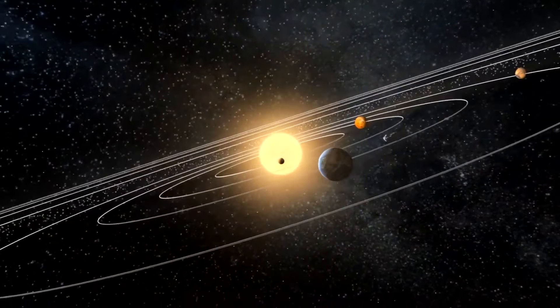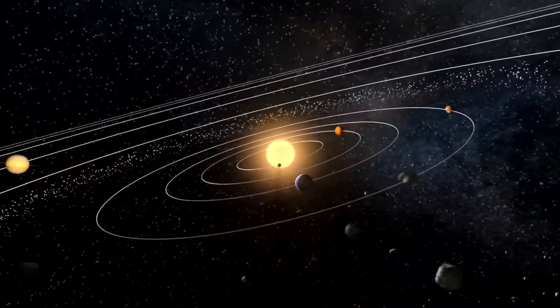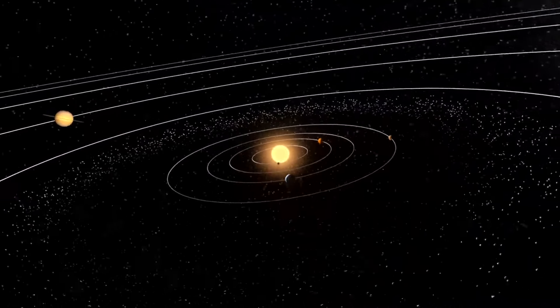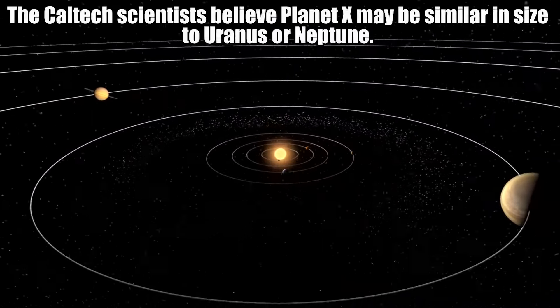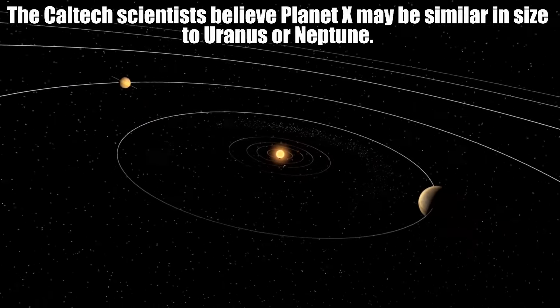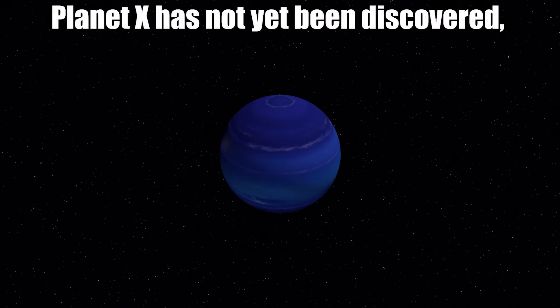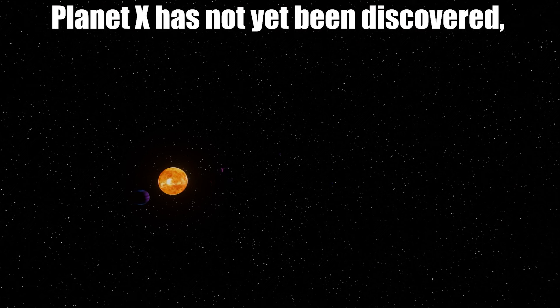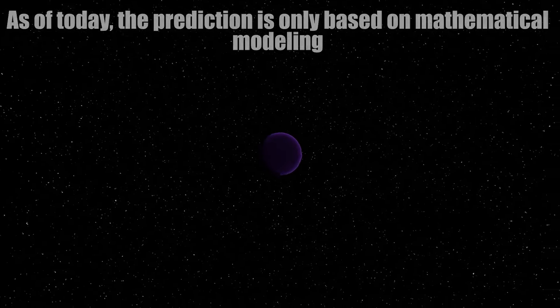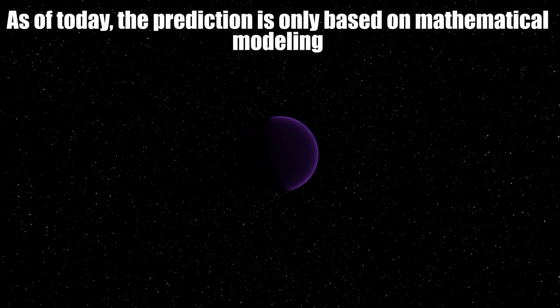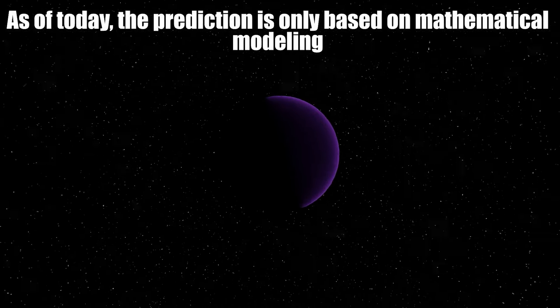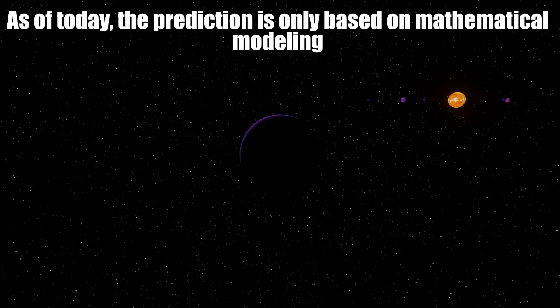Astronomers are now searching for this predicted Planet X. The Caltech scientists believe that Planet X may be similar in size to Uranus and Neptune. Planet X has not yet been discovered and there is debate in the scientific community about whether it exists. As of today, the prediction is only based on mathematical modeling.